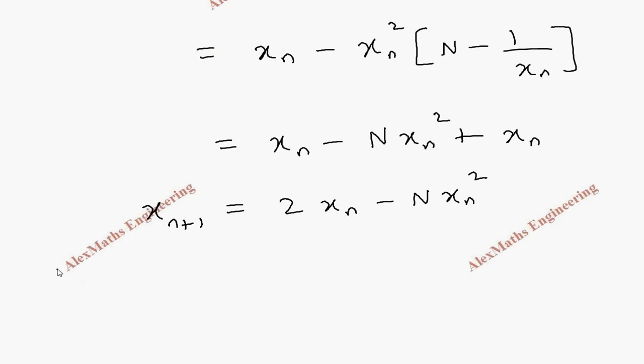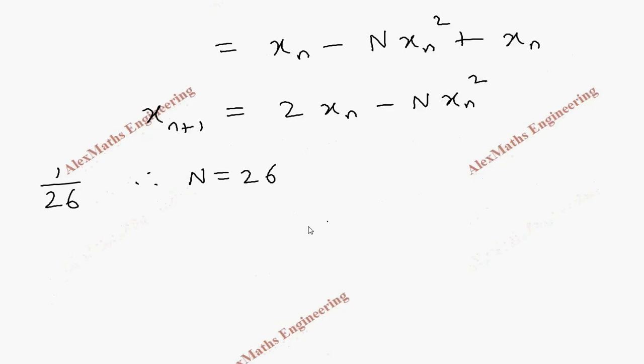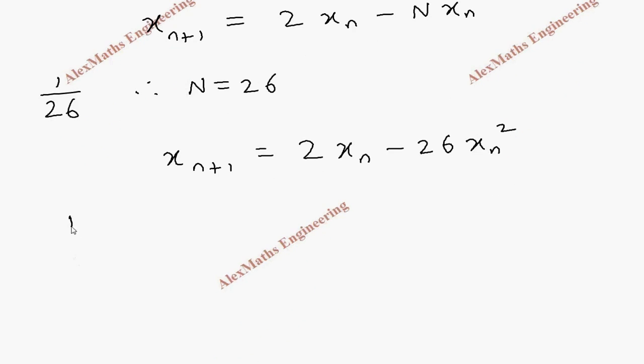Now using this we are going to find the value of 1 by 26. Therefore the value of N is 26. So let's rewrite this formula: x_n+1 equals 2x_n minus 26 x_n square. Now, already we know 1 by 25 is 0.04, so we are going to take the closer value. We choose x_0 as 0.04.